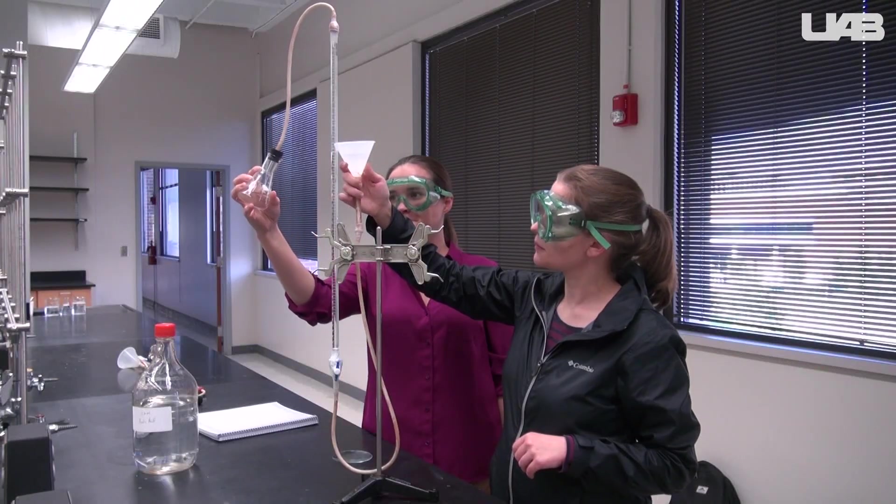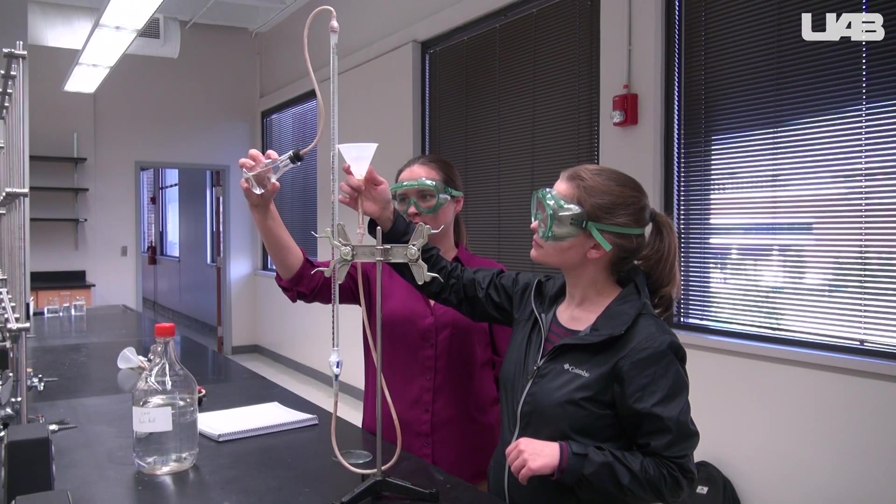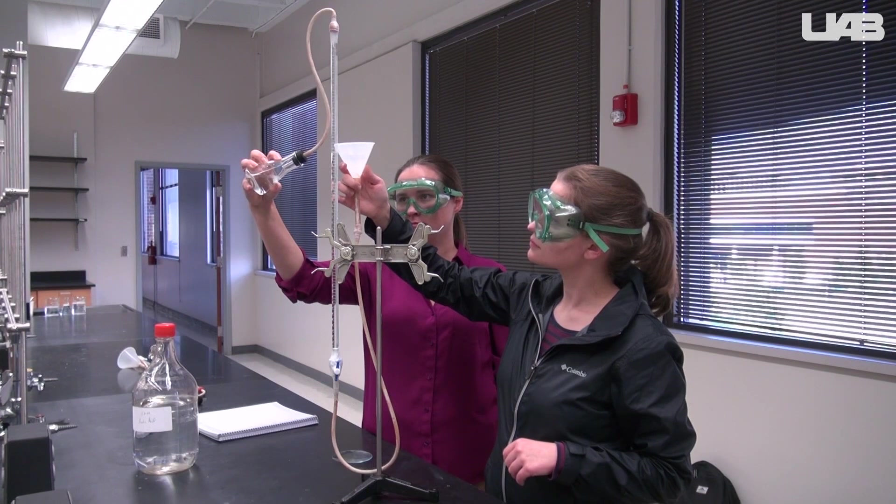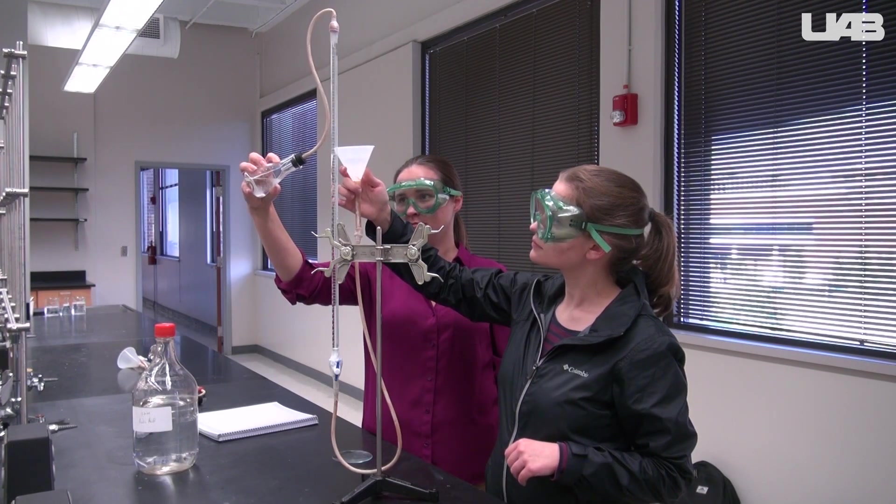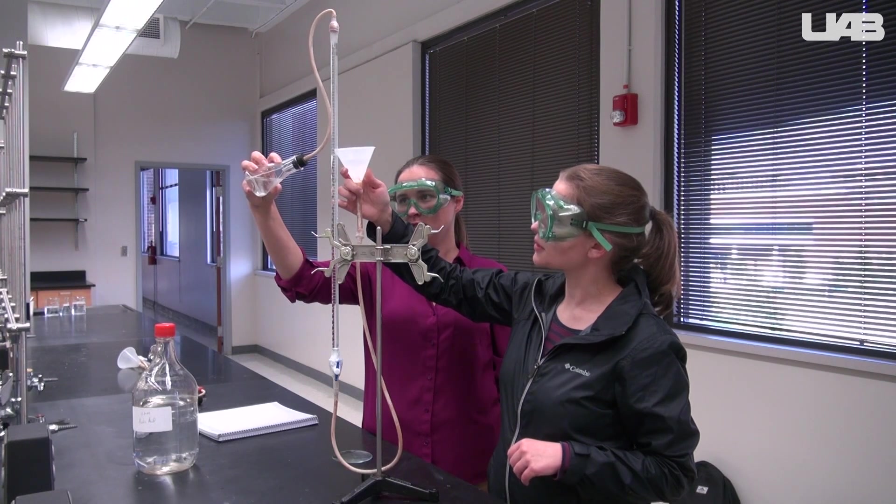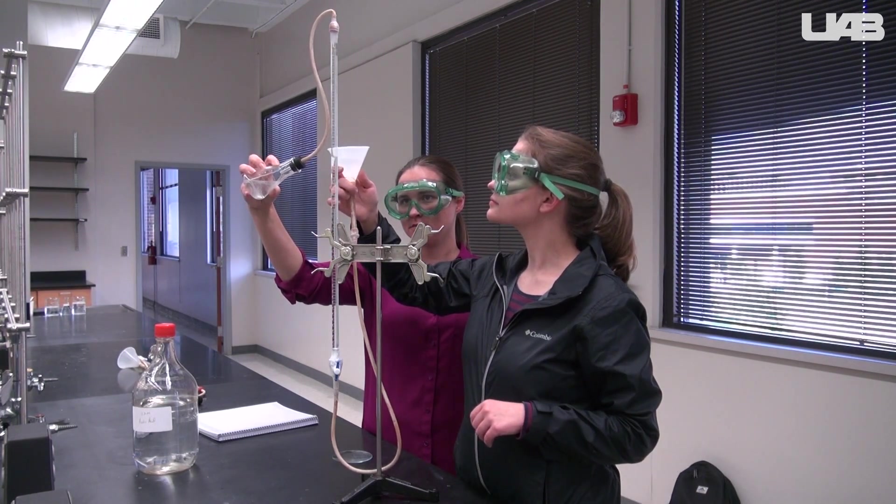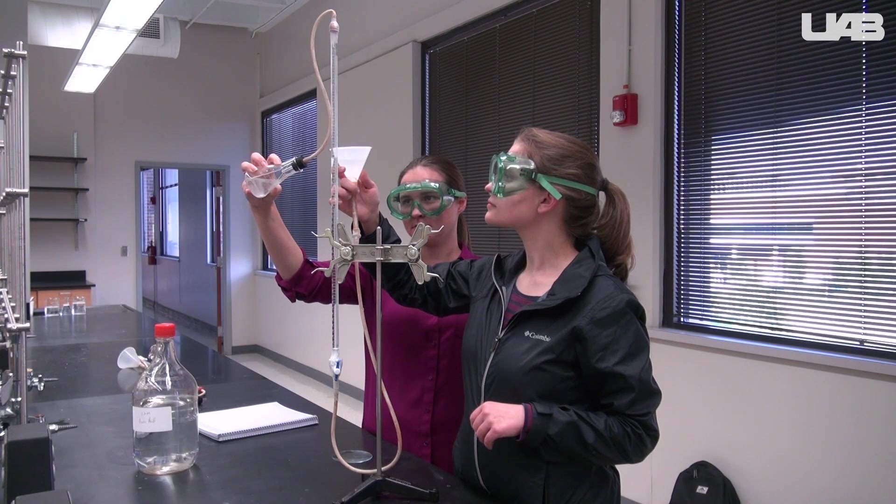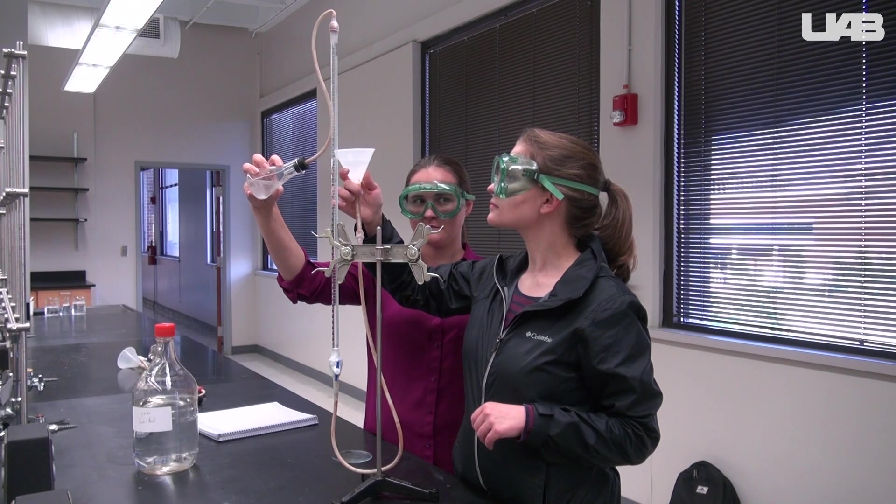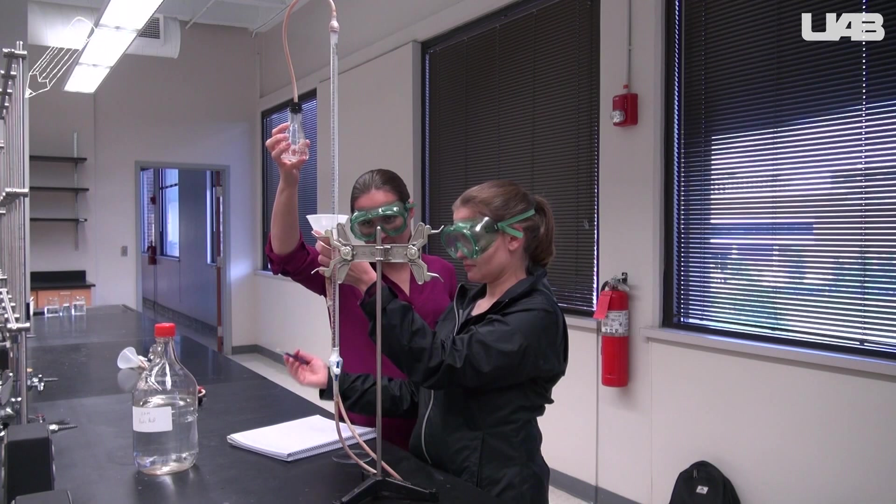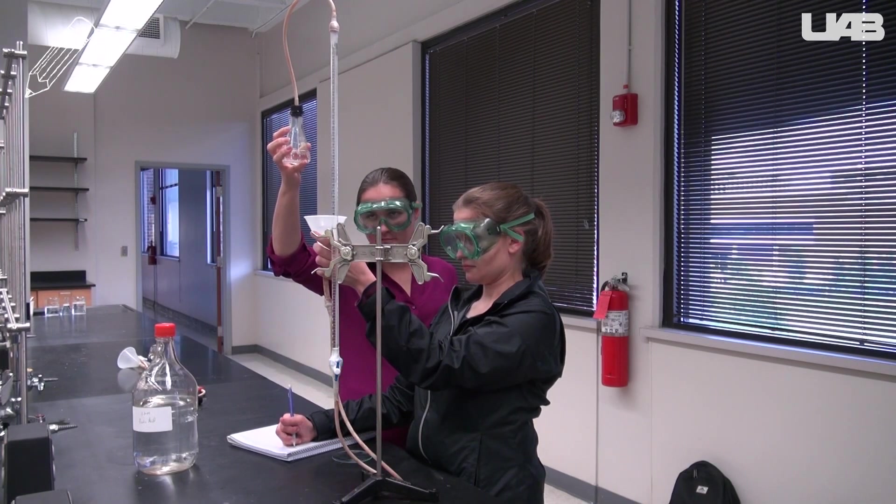When you are ready, tip the Erlenmeyer flask to the side so that the tablet is fully immersed in the solution. You can see the reaction start to take place. The volume will start to drop in the burette, and the person that is holding the funnel should slowly lower it so that the water level of the funnel matches that of the burette. When the level in the burette stops dropping and remains constant, record the final volume.